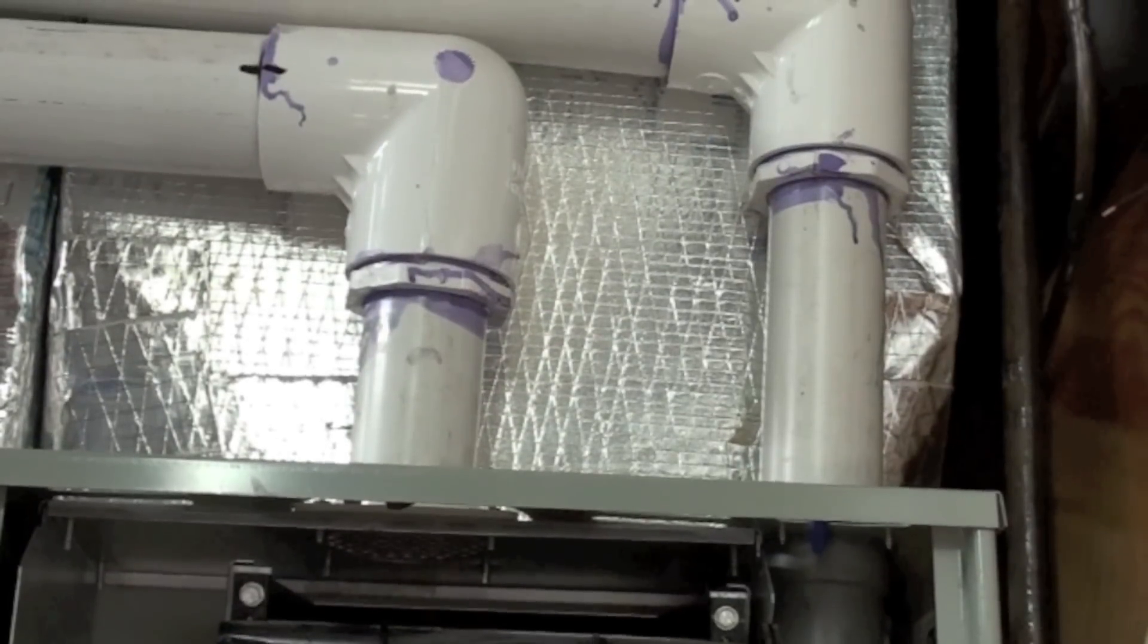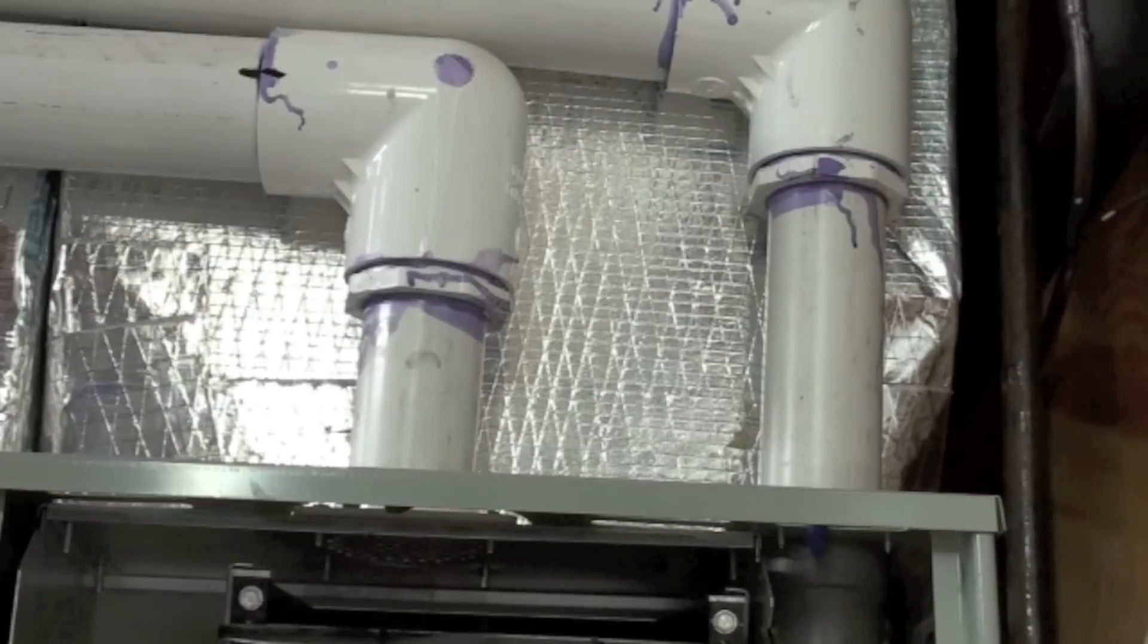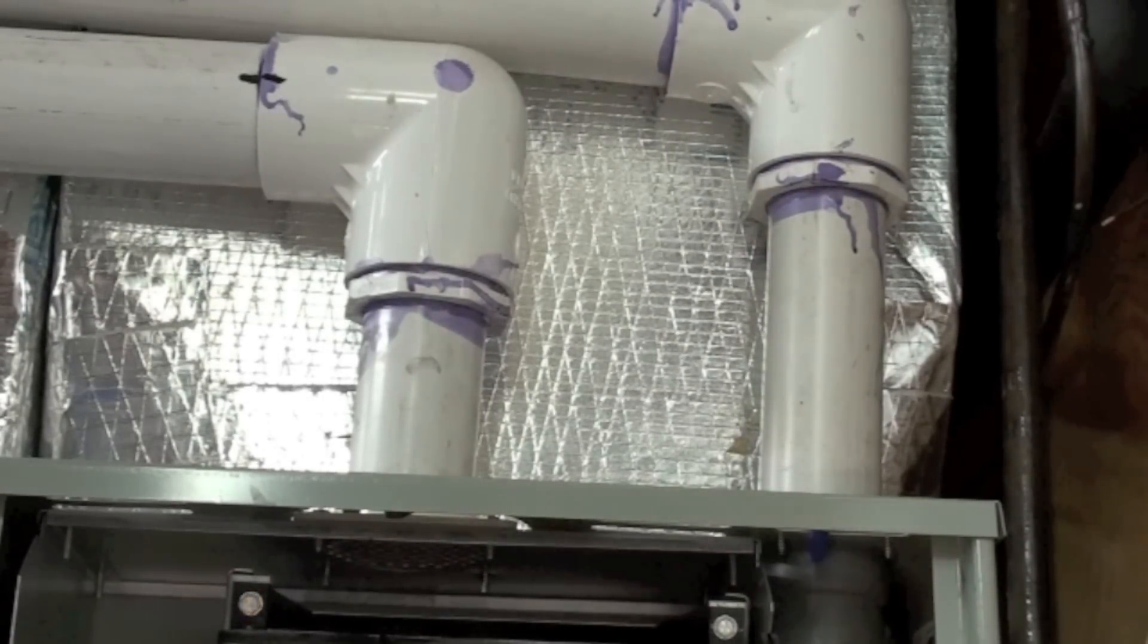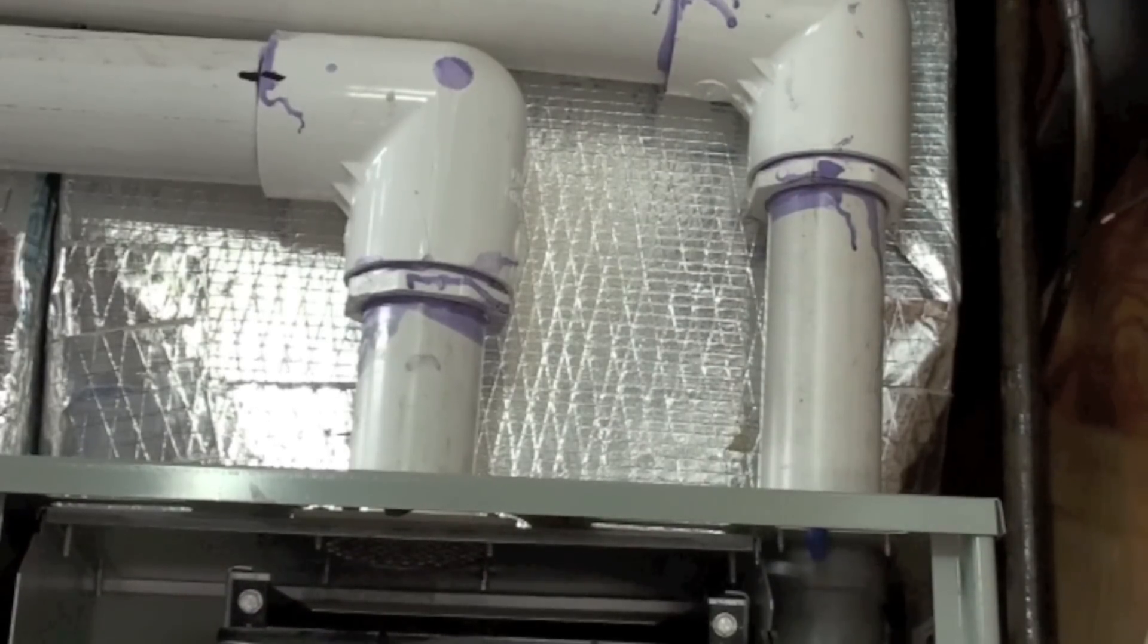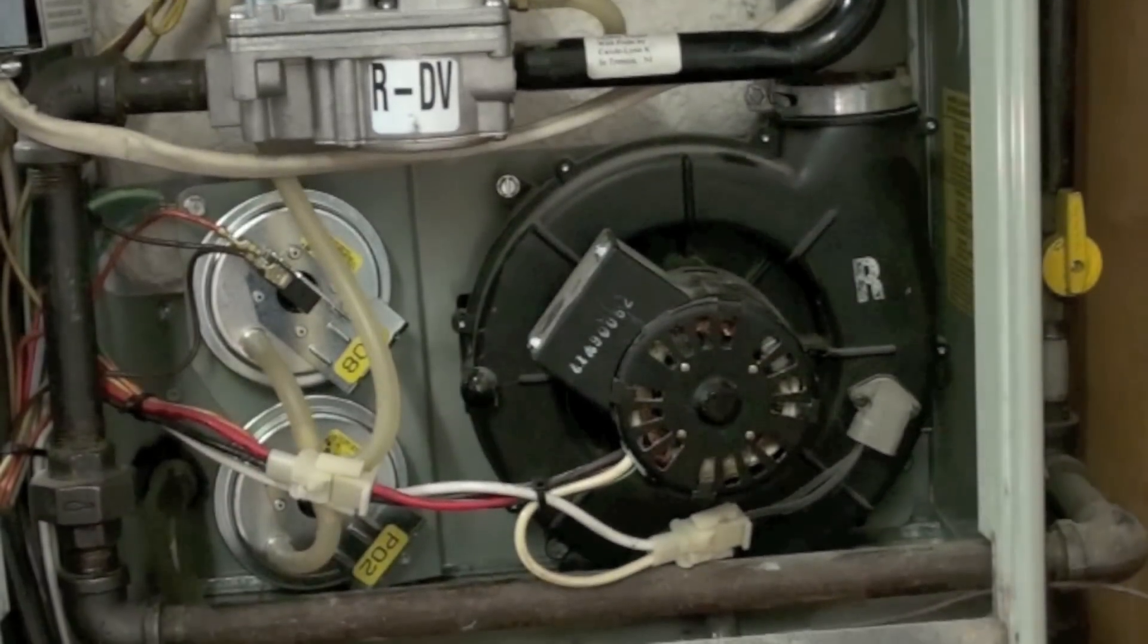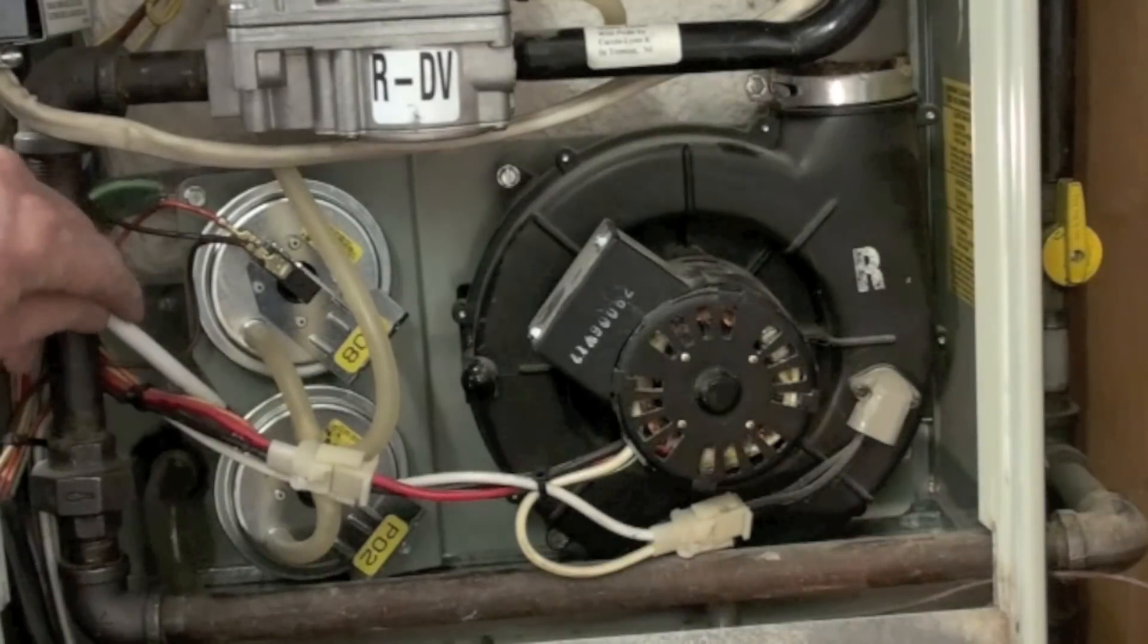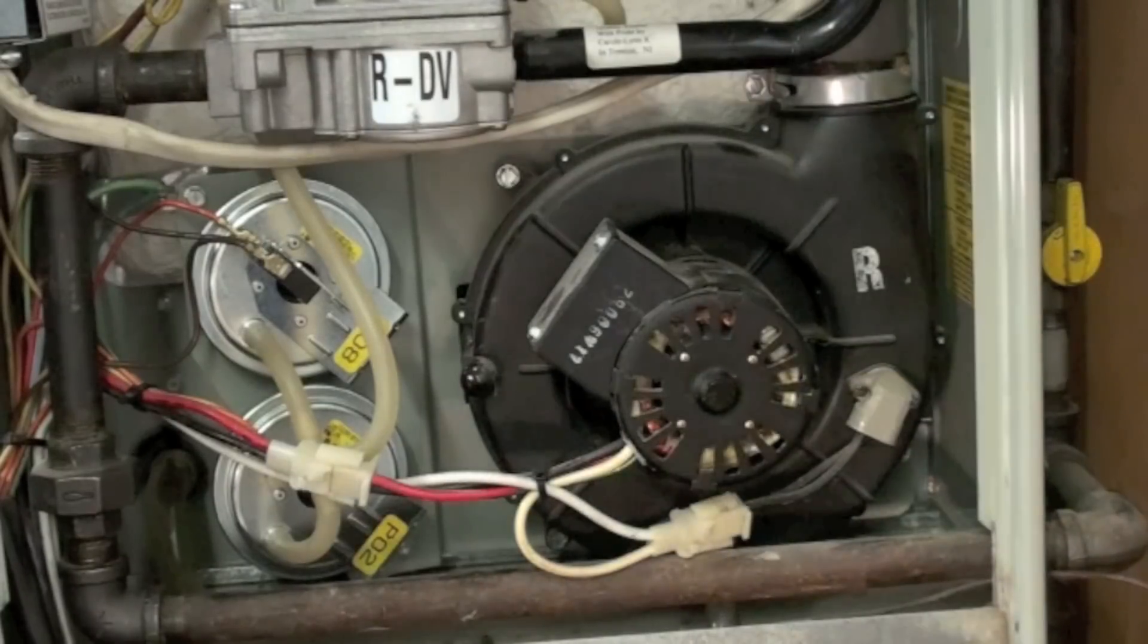If your integrated furnace control says there's a pressure switch problem, then you got to start looking at things like venting. Is the outlet plugged? Is the inlet plugged? Is there snow in it? Is there a screen in it and the screens are dirty or got ice on it? All these things can cause short cycling on these machines. Don't always just blame that little old pressure switch because it is just a signal. It's a little signalman telling the control that there's something wrong in the furnace.